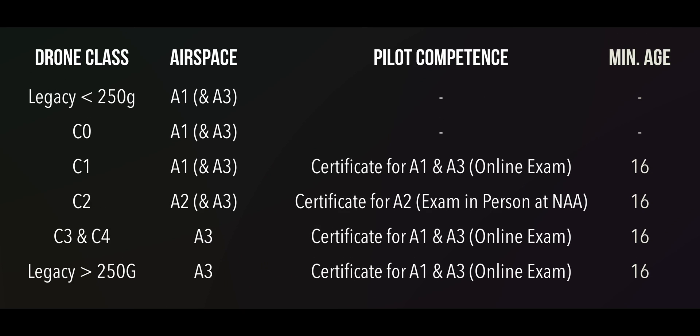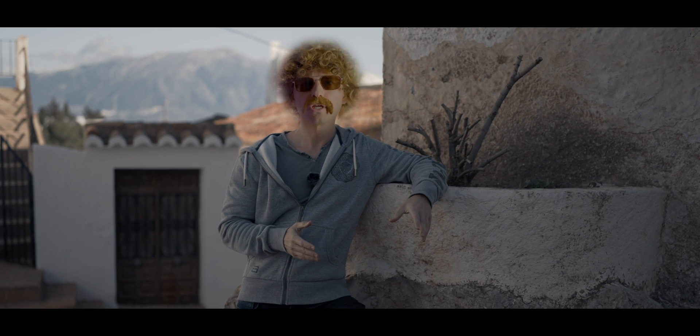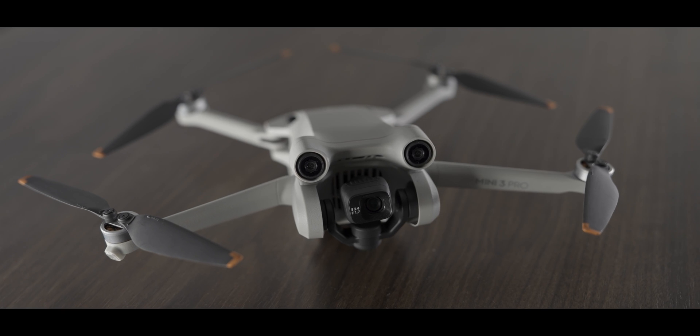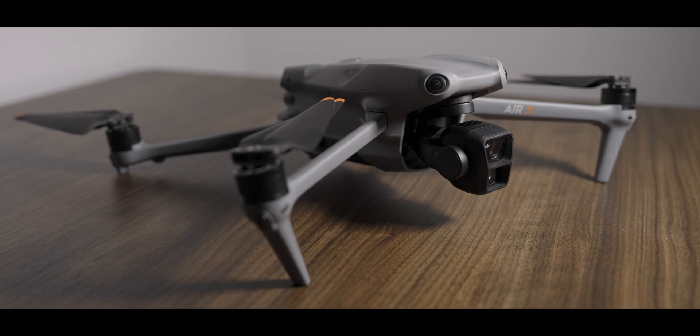It might be handy to have an overview table showing allowed airspace subcategories and competence requirements for each drone class. Basically, things get less complicated in 2024: apart from unlabeled legacy drones between 250 grams and 2 kilograms — which are now required to operate only in airspace subcategory A3 — everything stays the same for unlabeled drones. For new drones with C-class labels, those labels offer more operational possibilities than before.